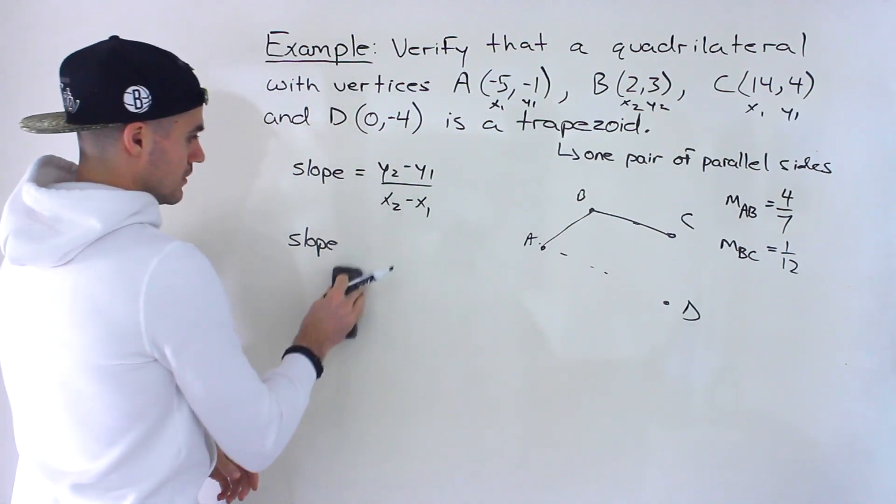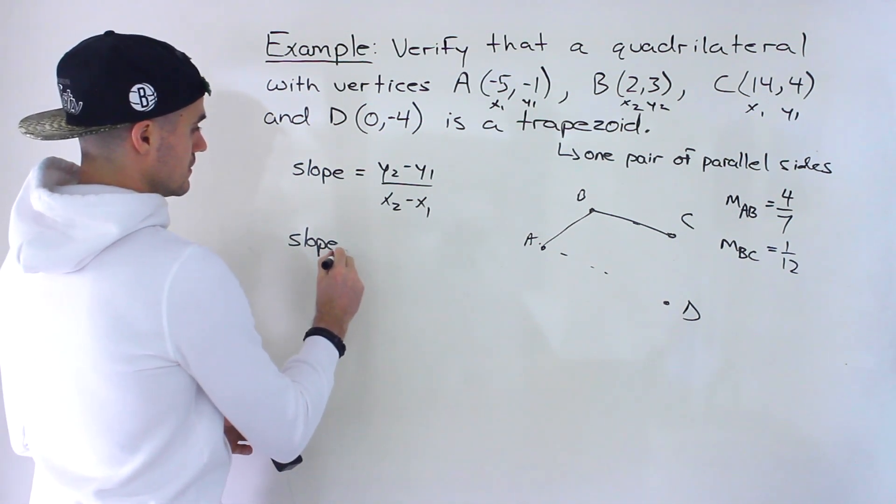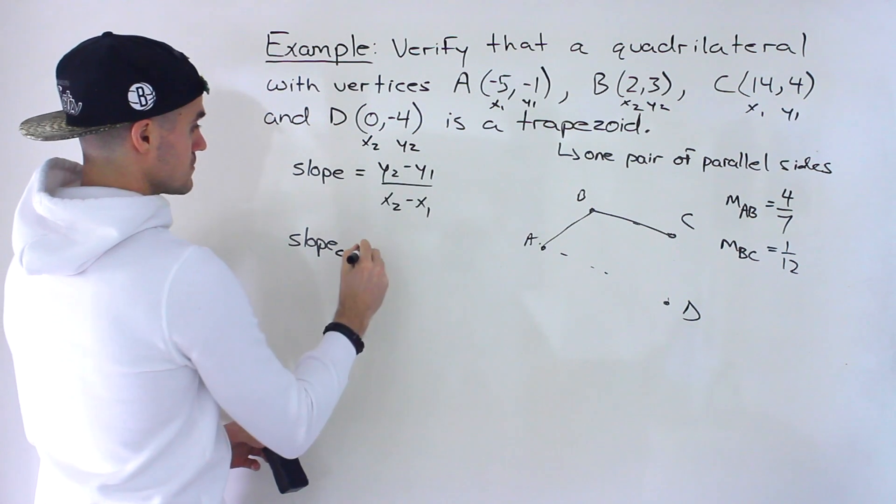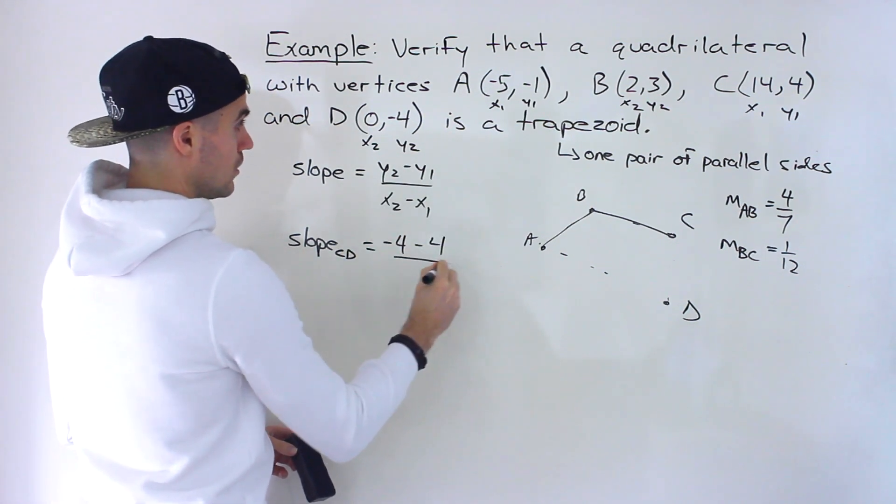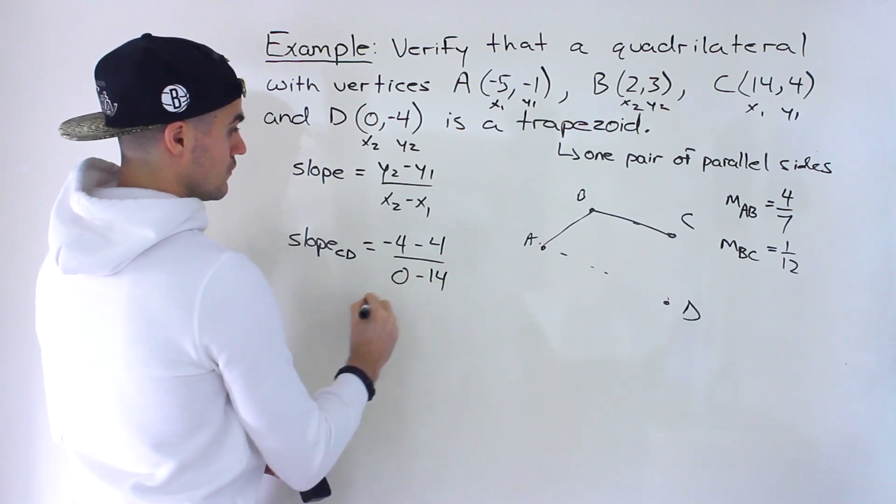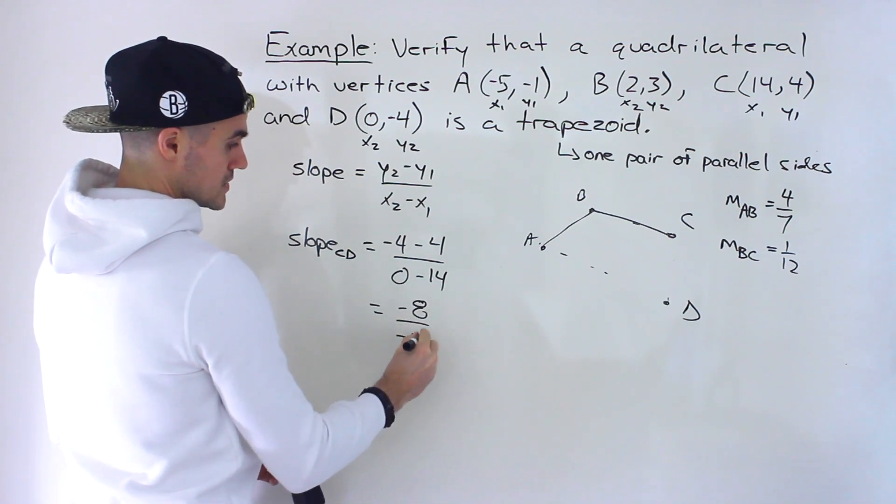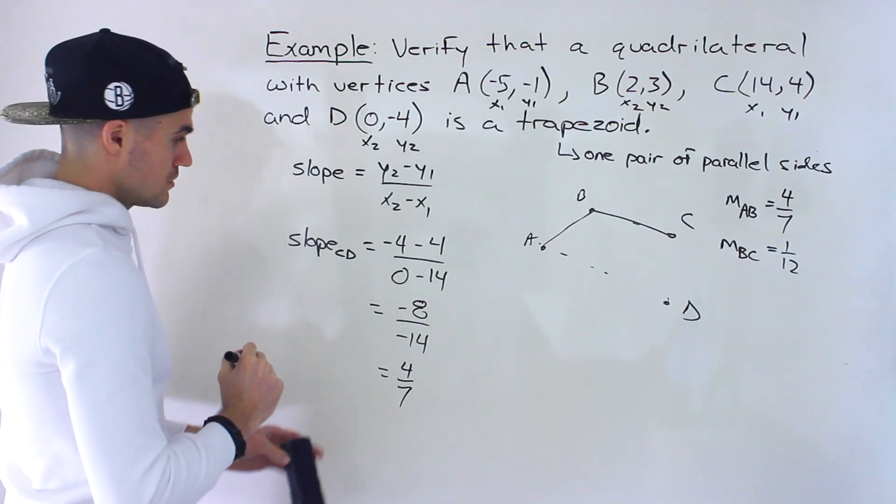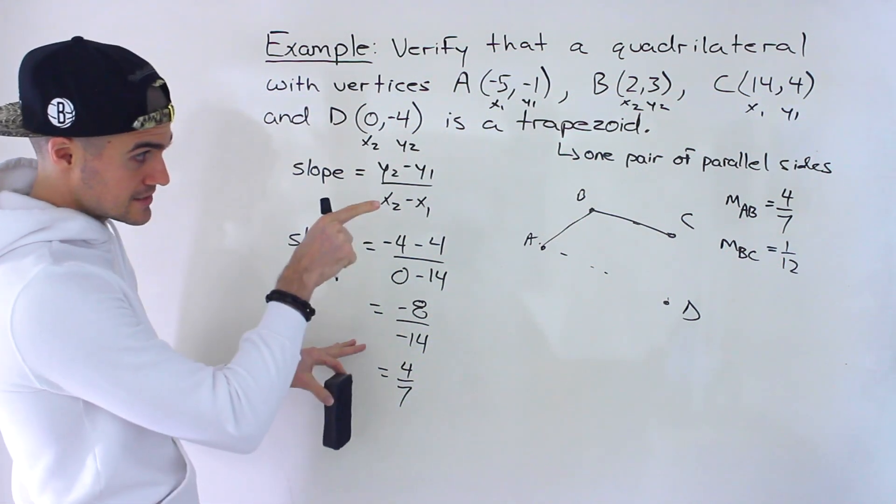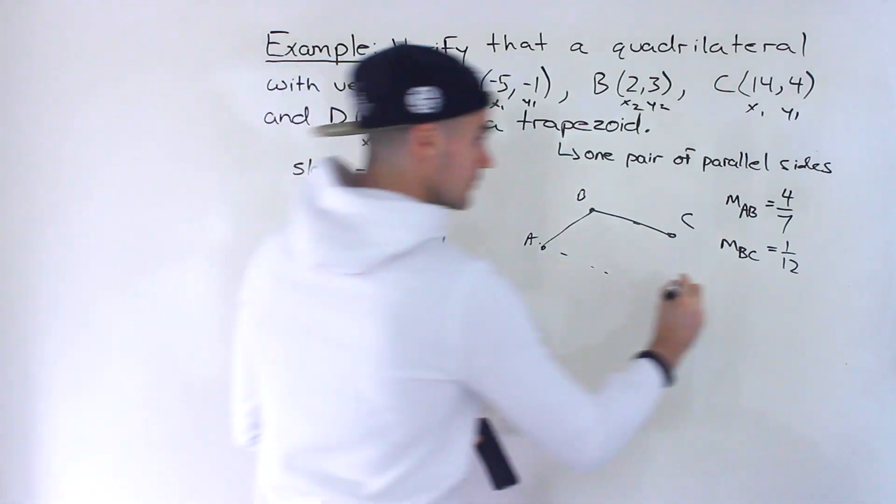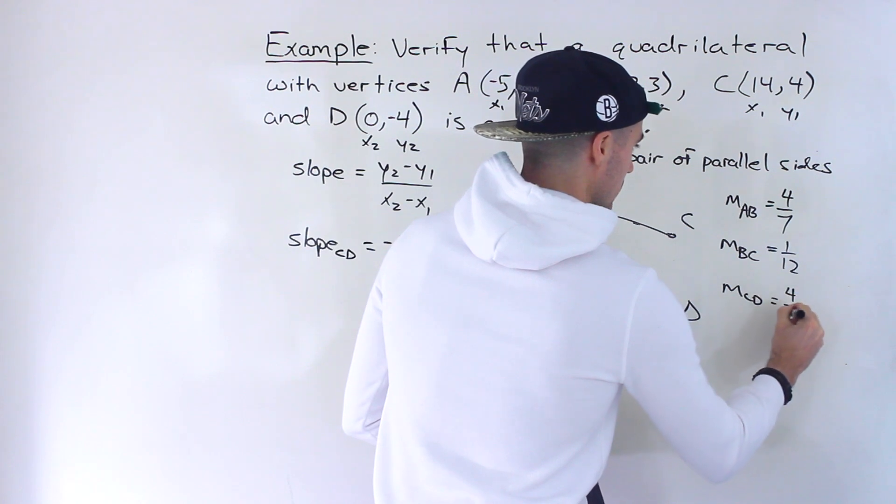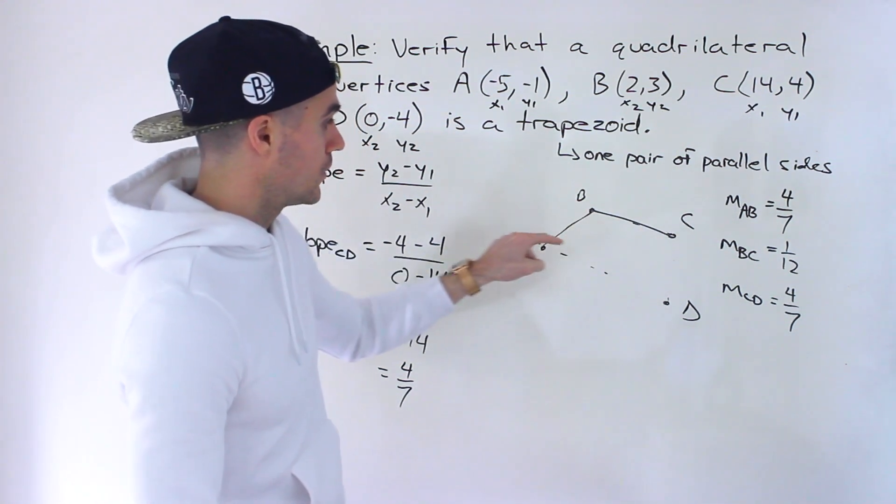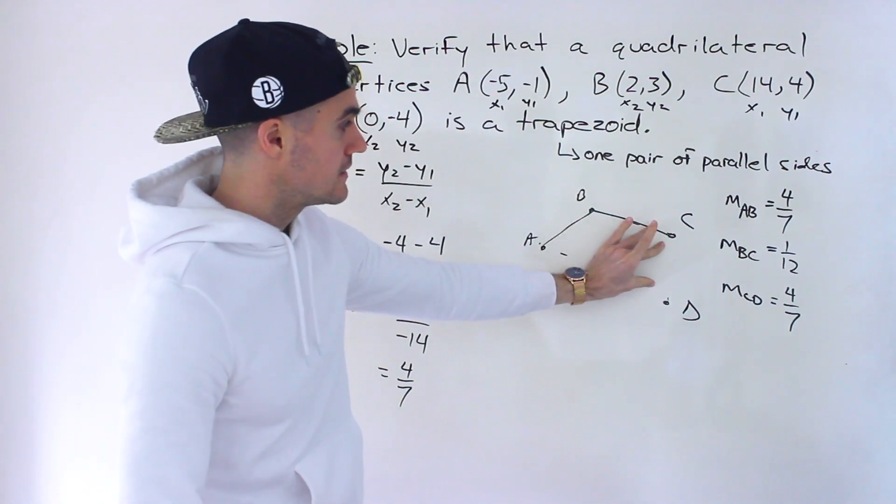So next would be CD, we're finding this. So we got C which is labeled as x1, y1. Let's label D as x2, y2. So we'll have -4 minus 4 over x2 which is 0 minus x1 which is 14. This would be -8 over -14 which would simplify to, notice the negatives make a positive, so this would simplify to 4 over 7. So that's the slope of CD. So notice actually CD and AB are parallel. They have the same slope. So this diagram was actually incorrect. The two parallel lines are going to be AB and CD.